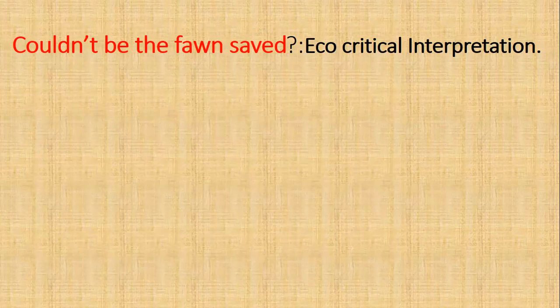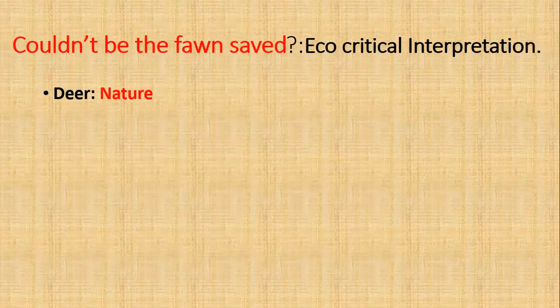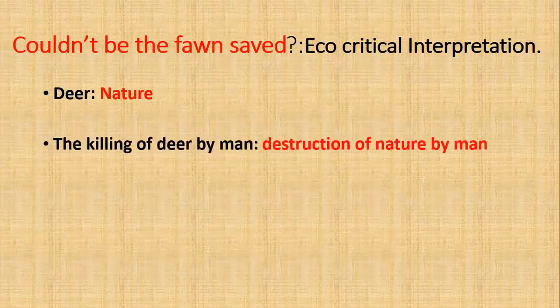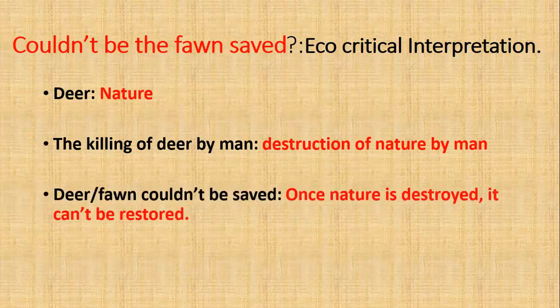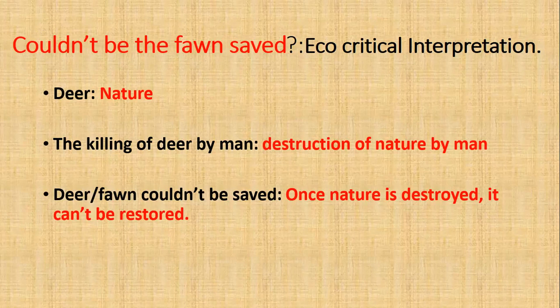There is always a question that can be raised: couldn't the fawn be saved? Why didn't the speaker think about other options? When we approach this question from the perspective of ecocriticism, then we interpret deer as nature. Deer stands for nature, and the killing of deer by man is in fact the destruction of nature by man. The fawn could not be saved because once nature is destroyed, it cannot be restored. What is done cannot be undone.